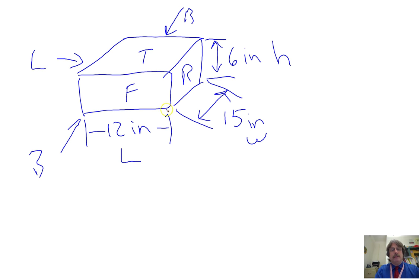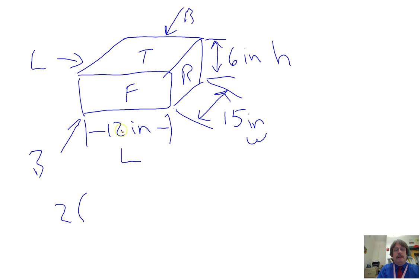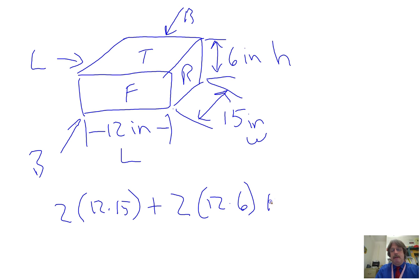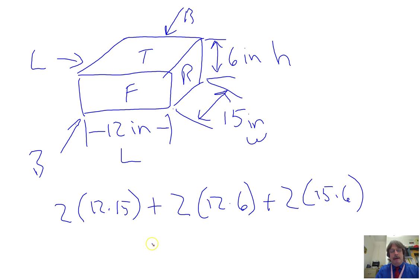These are dimension lines — from this line to this line is 12 inches. I use the architectural engineering technique for clarity on where dimensions are. So applying our formula 2(l×w): 12×15, plus 2(l×h): 12×6, plus 2(w×h): 15×6. Do what's inside parentheses first, then multiply by 2, add them all up, and remember your answer should be in inches squared.